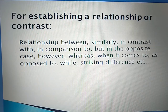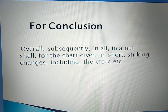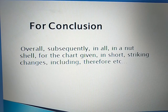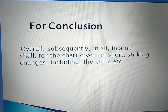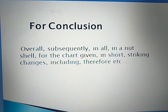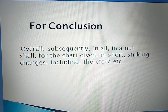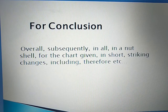Then comes our third paragraph — the Conclusion. We start with: 'overall', 'subsequently', 'in all', 'in a nutshell', 'for the chart given', 'in short'. We can write: 'the chart describes about this striking changes', using the word 'including', 'therefore'. These are the terms which we can use while writing the conclusion of the paragraph.